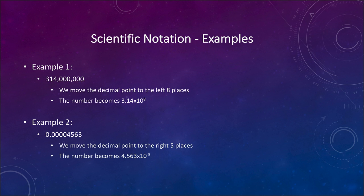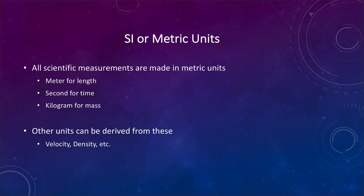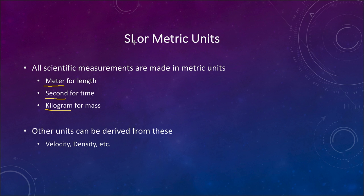Now the units that we use — we use what we call the metric system of units, or SI (Système International) units. Both mean the same thing, and all scientific measurements are done in metric units. That means we use things like the meter as a unit of length, the second as a unit of time, and the kilogram as a unit of mass. You can divide them up into other units; everything in the metric system is based on powers of 10.